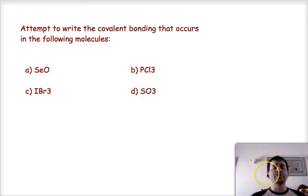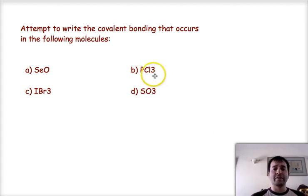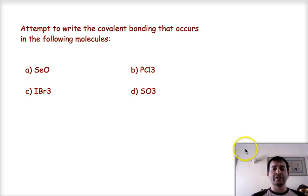At home, I want you to try these four molecules: a molecule of selenium oxide, a molecule of phosphorus trifluoride, a molecule of iodine tribromide, and a molecule of sulfur trioxide. The computer has changed the formatting on me, but I will correct that in the lecture — just make sure that you try those molecules out.